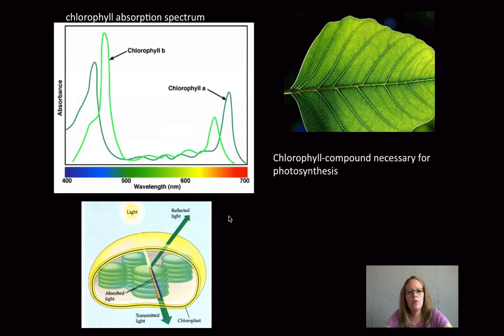So within the thylakoid membrane, there are some pigments and proteins that are embedded. And the most important compound, a compound necessary for photosynthesis, is chlorophyll. Specifically, there are two types of chlorophyll: chlorophyll A and chlorophyll B.